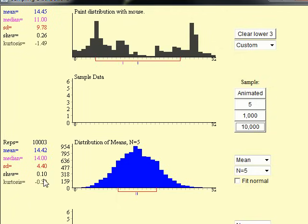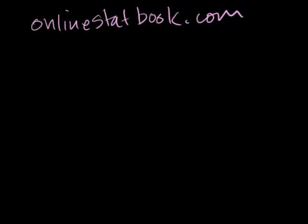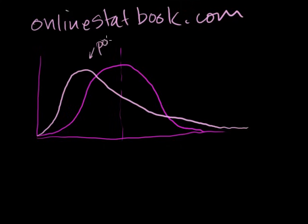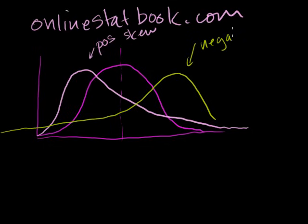Let me diverge a little bit on skew and kurtosis — fairly straightforward concepts. Skew: if this is a perfect normal distribution, it would have a skew of 0. If you have a positive skew, you have a larger right tail — it has a long tail to the right. A negative skew has a long tail to the left. If you have trouble remembering it, just remember which direction the tail is going. If something has no skew, it's nice and symmetrical around its mean.